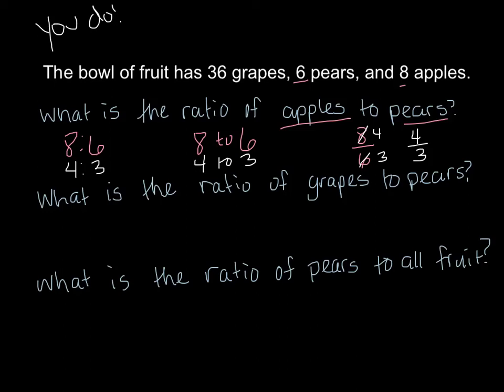What is the ratio of grapes to pears? We're looking at grapes, there's 36 of them, to pears, there's six of them. 36 to 6 ratio. That's the order we need it in. Now reduce it if it's able to be reduced. And it can be because six goes into both of these numbers. Six fits into 36 exactly six times and six fits into six one time. So it's a six to one ratio for grapes to pears.